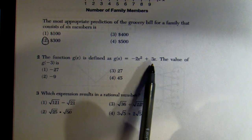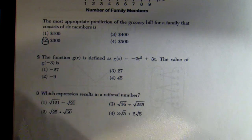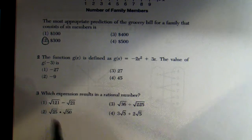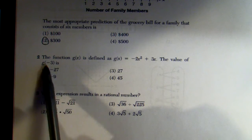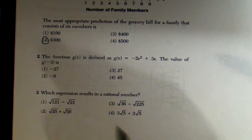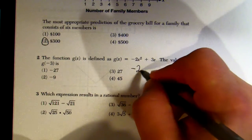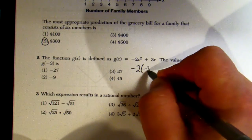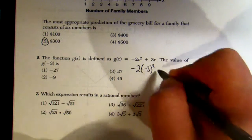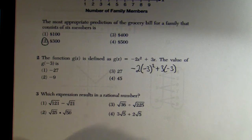Question 2: the function g(x) is defined as g(x) = -2x² + 3x. The value of g(-3) is... Since we have the -3 next to the g, that's telling us what x is. Wherever we see an x, we plug in -3. So we have: -2(-3)² + 3(-3).